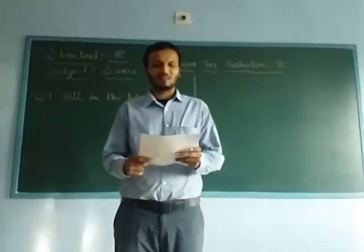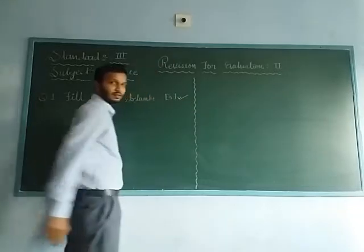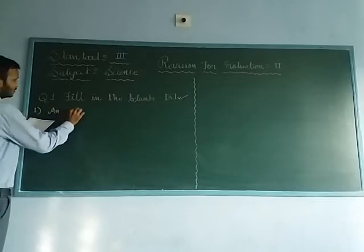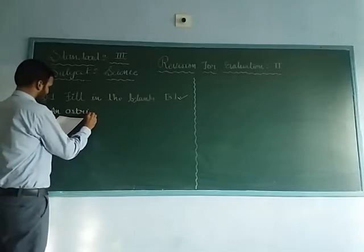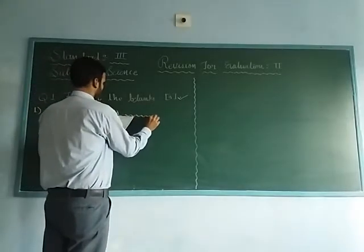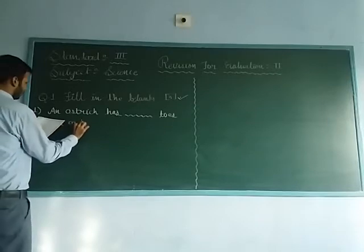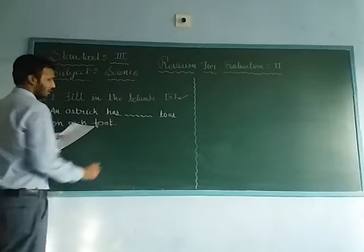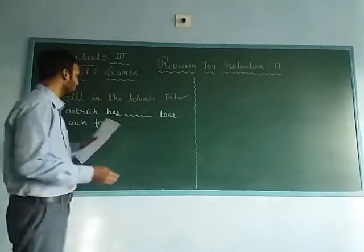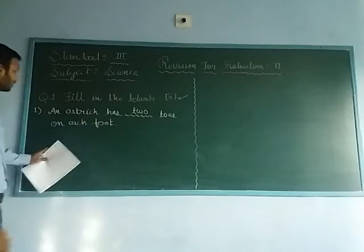First number: an ostrich has blank toes on each foot. It will be for 3 marks. There are 2 options given to us: 3 and 2. So what is the answer? 2. An ostrich has 2 toes on each foot.